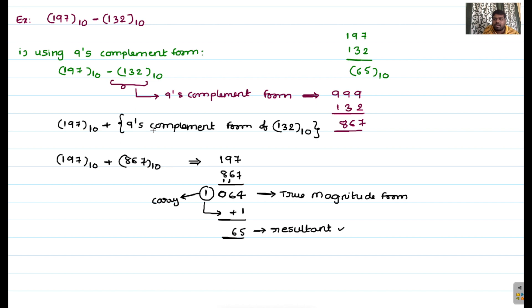To identify the complement form from the name: if you see 9's complement, the number system is decimal (base 10). If you see 1's complement, the number system is binary. If you see 7's complement, it is automatically base 8 (octal). In r-minus-1's complement calculation, if a carry is generated, add the carry in the next stage.